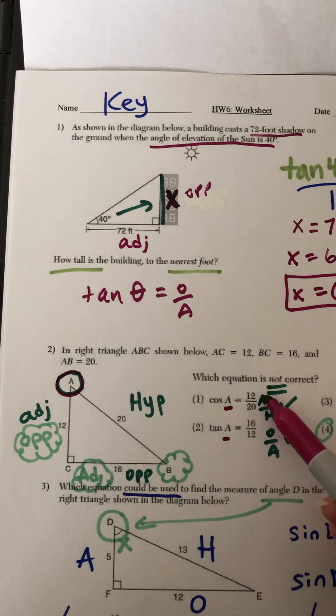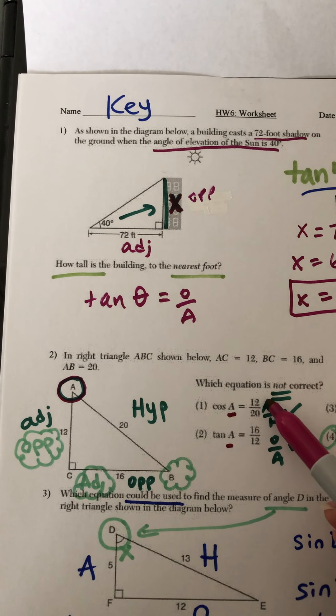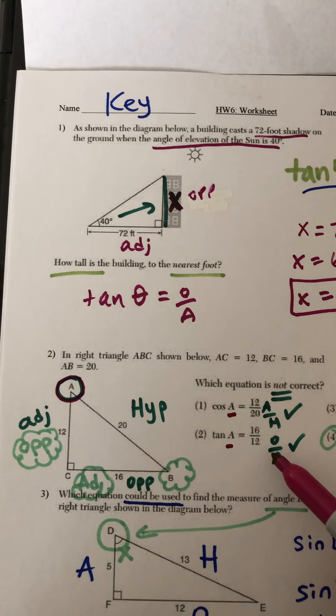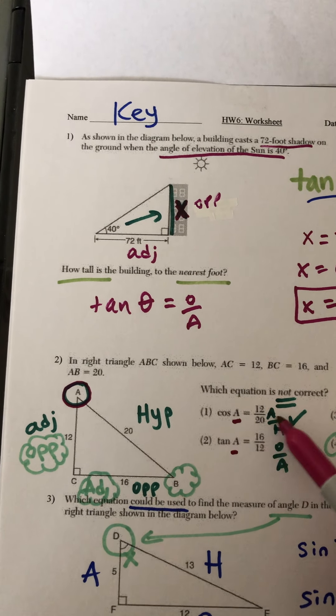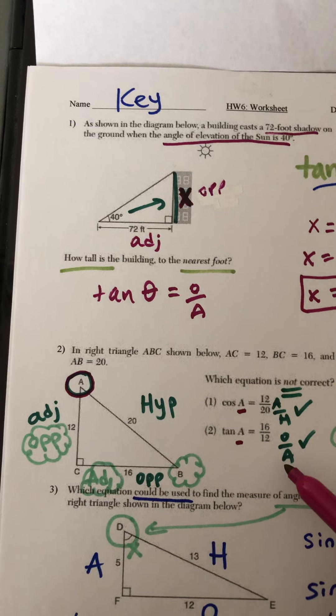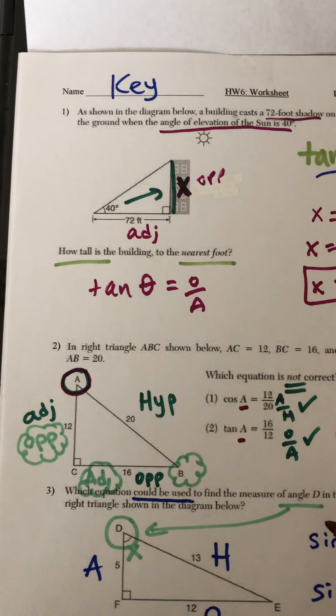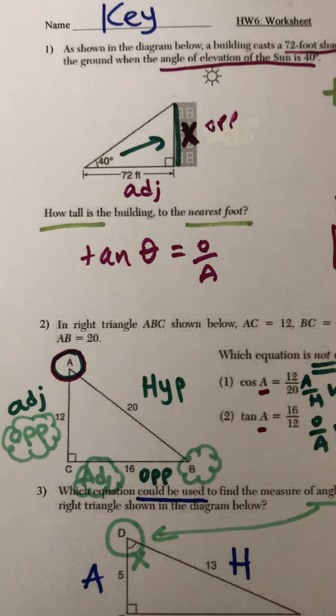So if you take a look, adjacent being 12 and the hypotenuse being 20 is correct. Same as 16 being opposite and 12 being adjacent. That works for cosine. That works for tangent. So now we know 1 and 2 are both correct. Now we're going to switch gears and look at angle B.